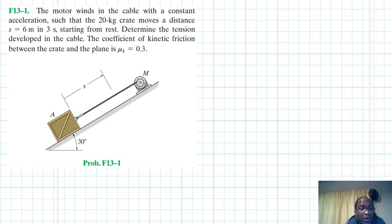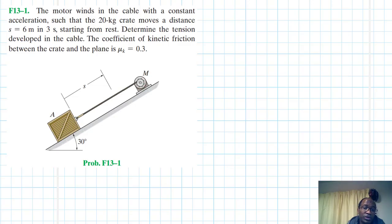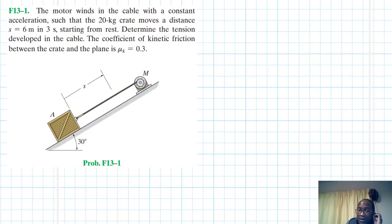Hello, I welcome you all. The problem reads: we have a motor that winds in the cable with a constant acceleration such that the 20 kg crate moves a distance s equal to 6 meters in 3 seconds starting from rest. Determine the tension developed in the cable. The coefficient of kinetic friction between the crate and the plane is μk equal to 0.3. This problem is from Engineering Mechanics and Dynamics, 14th edition by R.C. Hibbeler.